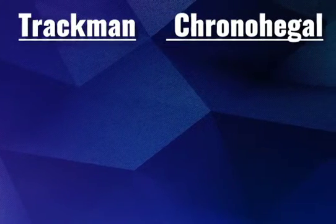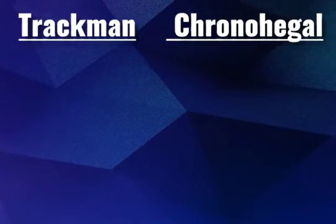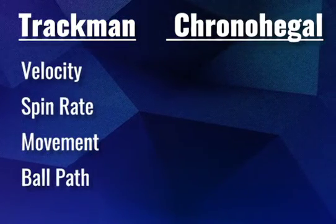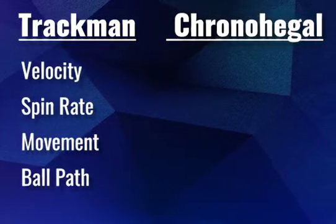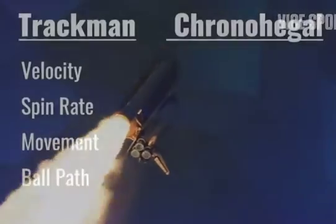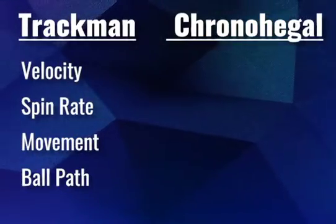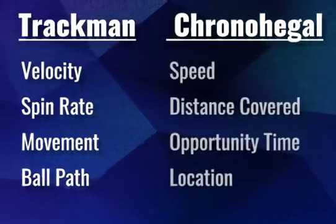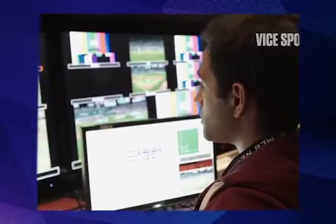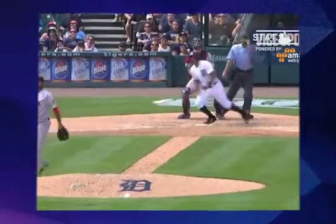The original StatCast system consisted of TrackMan and Chrono cameras. TrackMan focuses on ball movement — specifically velocity, spin rate, movement, and everything about the ball's path. This is actually the same technology used to track missiles in the military and falling debris from launching spaceships. Then you have Chrono cameras, which focus on player movement: speed, distance covered, opportunity time, and location. The two systems work in tandem to create a comprehensive picture of exactly what is happening on any given play.